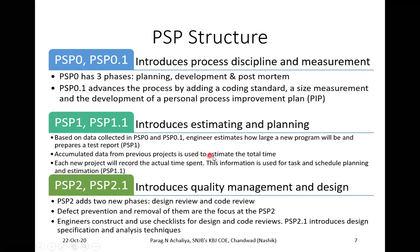Accumulated data from previous projects is used to estimate the total time for the current project. Each new project records the actual time spent, and this information is used for task and schedule planning and estimation, which is recorded in PSP 1.1. PSP 2 and 2.1 cover quality management and design. PSP 2 adds two new phases: design review and code review.